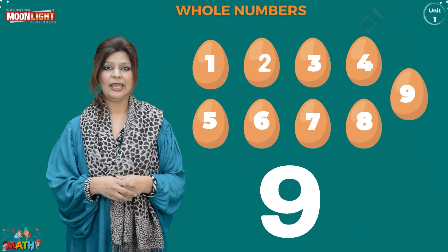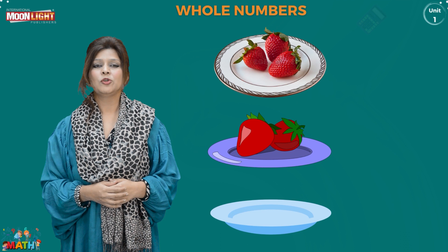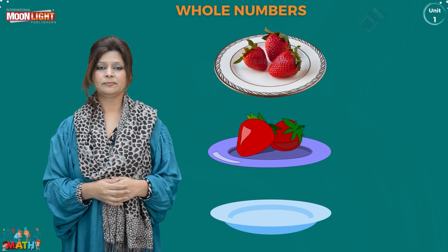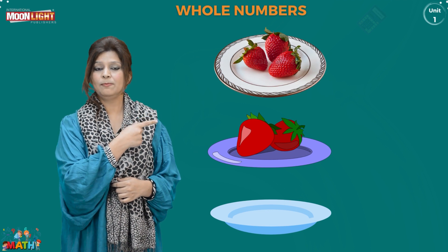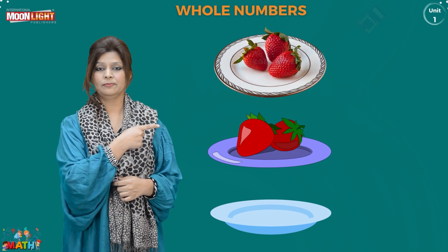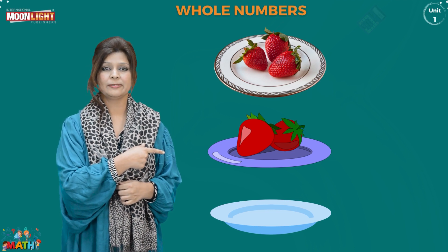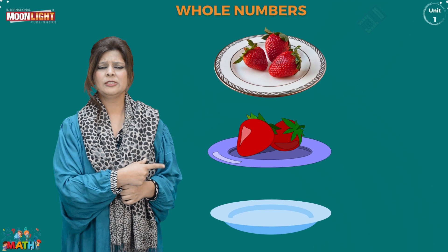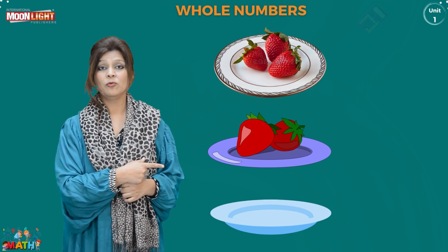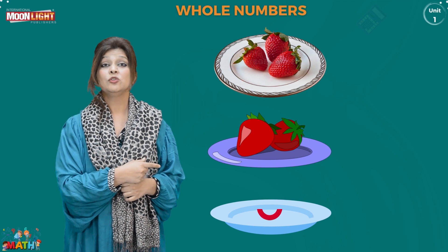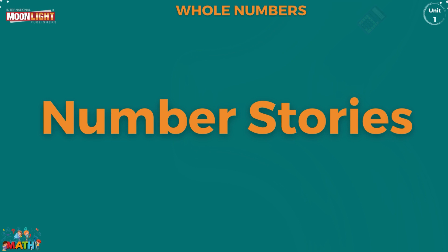Excellent! Fantastic! I want to eat strawberries. Count how many strawberries are there in these plates. Yes, this is three strawberries — very good. In this plate there are three strawberries. And what about this plate? Yes, in this plate there are two strawberries. Very good. What about this plate, students? In this plate there is nothing — no strawberry. So we will say there is zero strawberry in this plate.